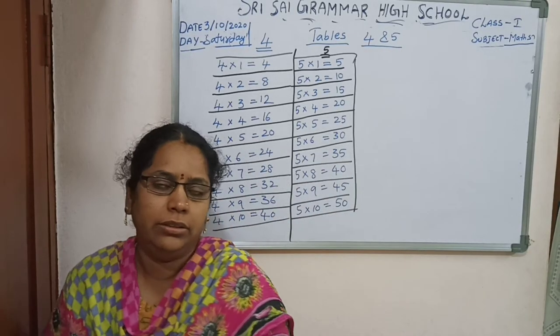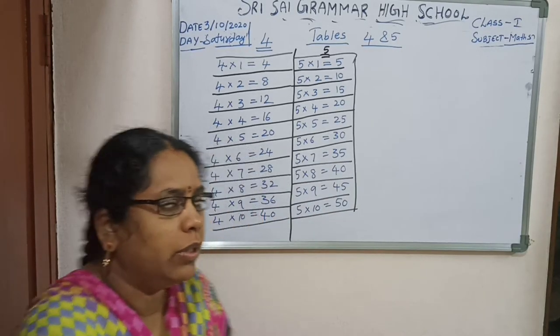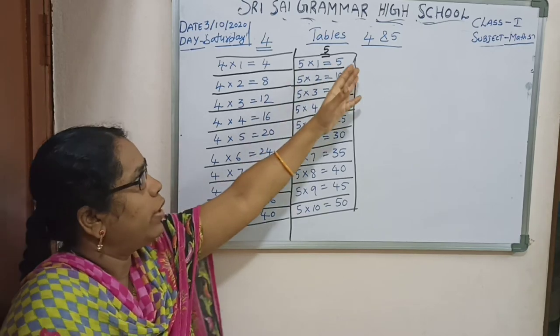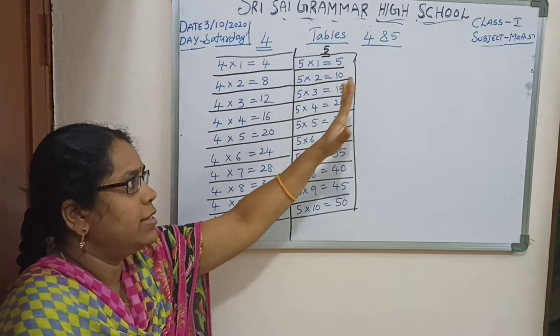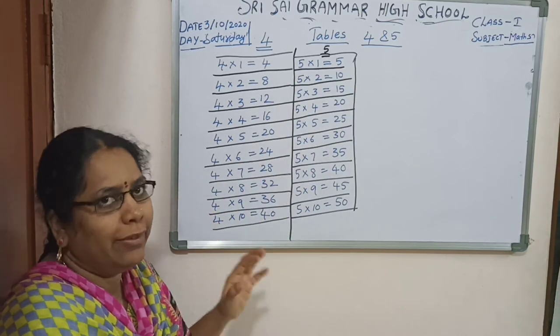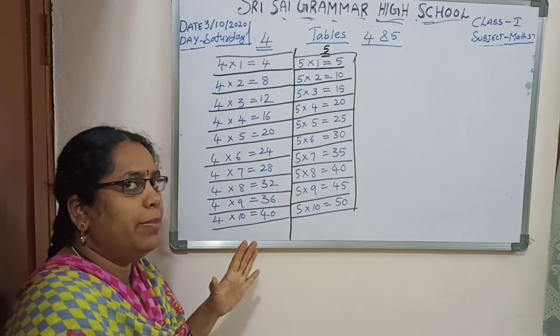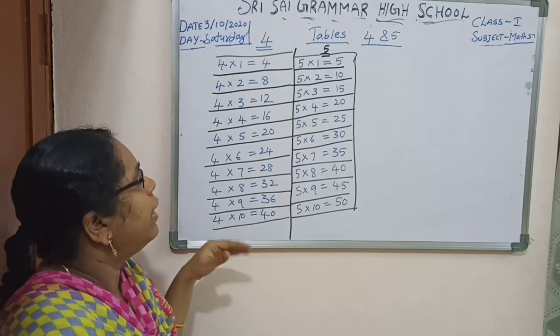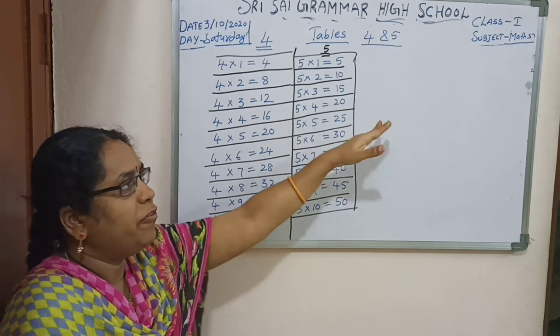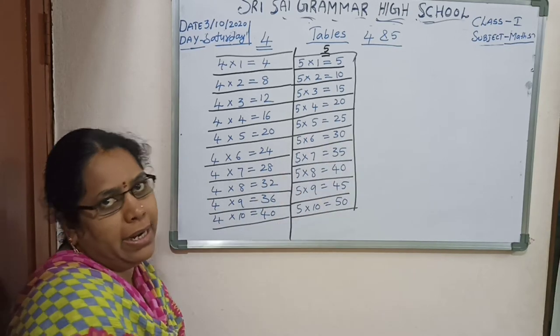Good morning children. Today we are going to learn tables of 4 and 5. Last class we already learnt 2, 3, 4 tables. But today I will teach 4 and 5 tables.